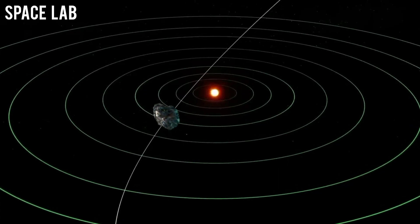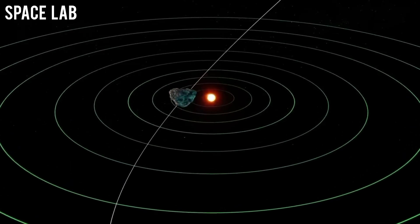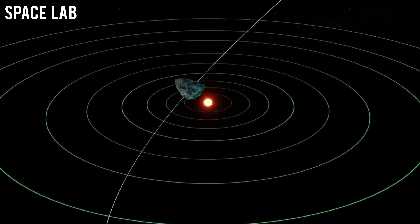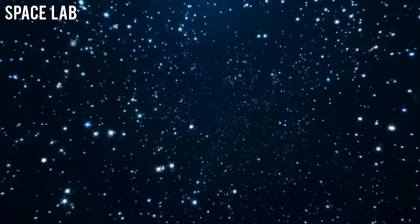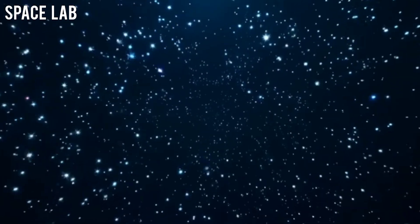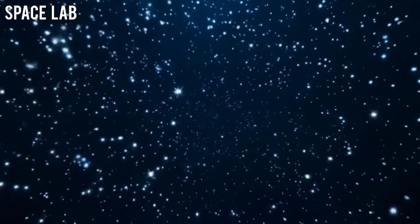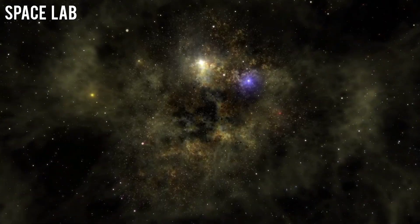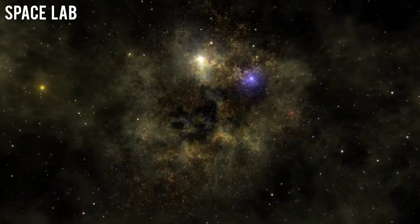The signal was too faint for Earth-based antennas to decode, so Webb's deep space array took over. For 72 continuous hours, the telescope locked on, gathering every fragment of data. When the first sequence was decoded, the translation appeared on the monitor: We are the first.